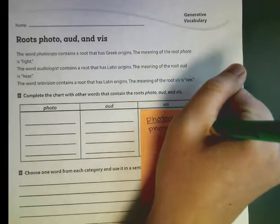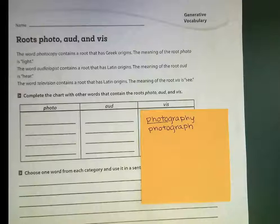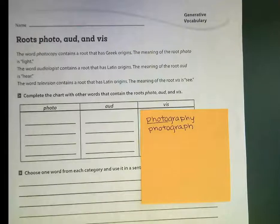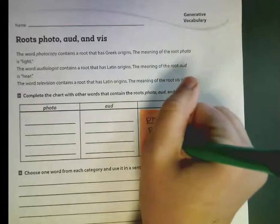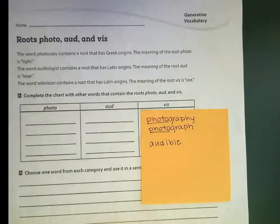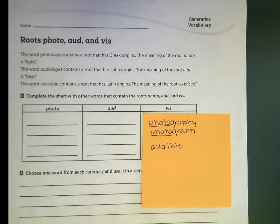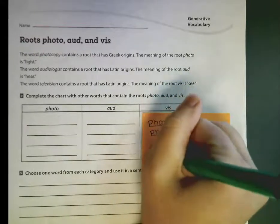And here are a couple examples. The second one is the word audiologist — that's how you pronounce it — which contains a root that has Latin origins. The meaning of the root aud is hear. So for example, like we did with photo, we have audible, which can be like someone reading a book to you — it's audible, you hear it. And we even have audition.